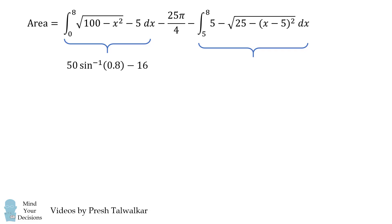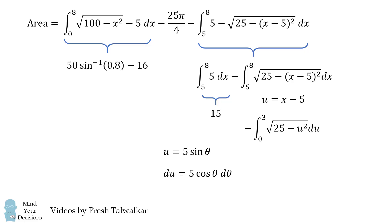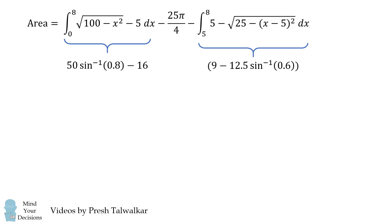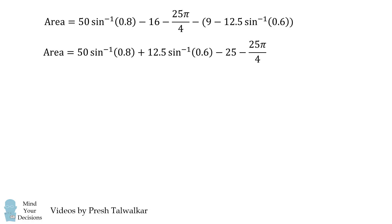For the last integral, we split into two parts — the first evaluates to 15. For the second, we use a u substitution with u equals x minus 5, changing limits and getting the integrand as the square root of (25 minus u squared). A trig substitution u equals 5 sine theta gives a similar calculation, yielding negative 6 minus 12.5 times the inverse sine of 0.6. Combining, this part equals 9 minus 12.5 times the inverse sine of 0.6. Putting it all together, the answer is 50 times the inverse sine of 0.8 plus 12.5 times the inverse sine of 0.6 minus 25 minus 25 pi over 4.